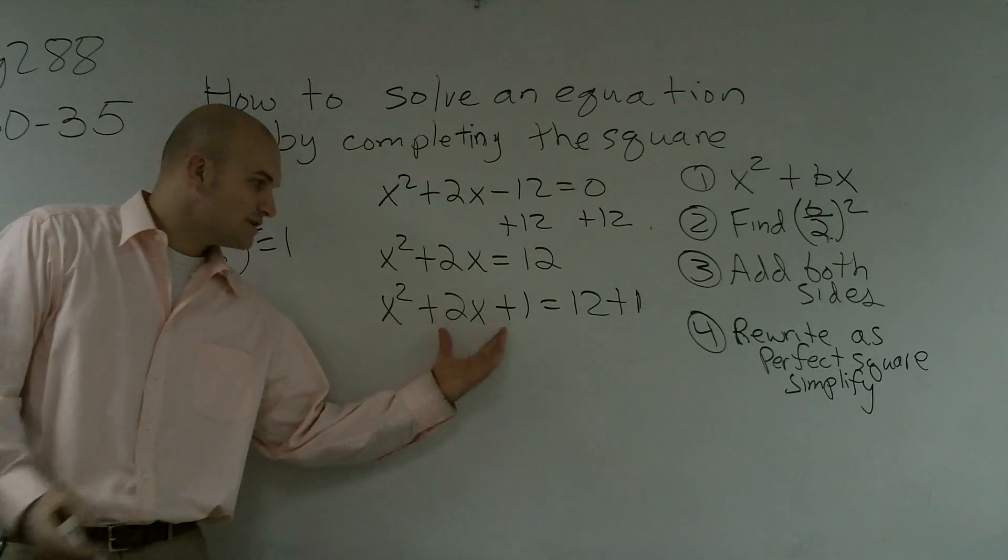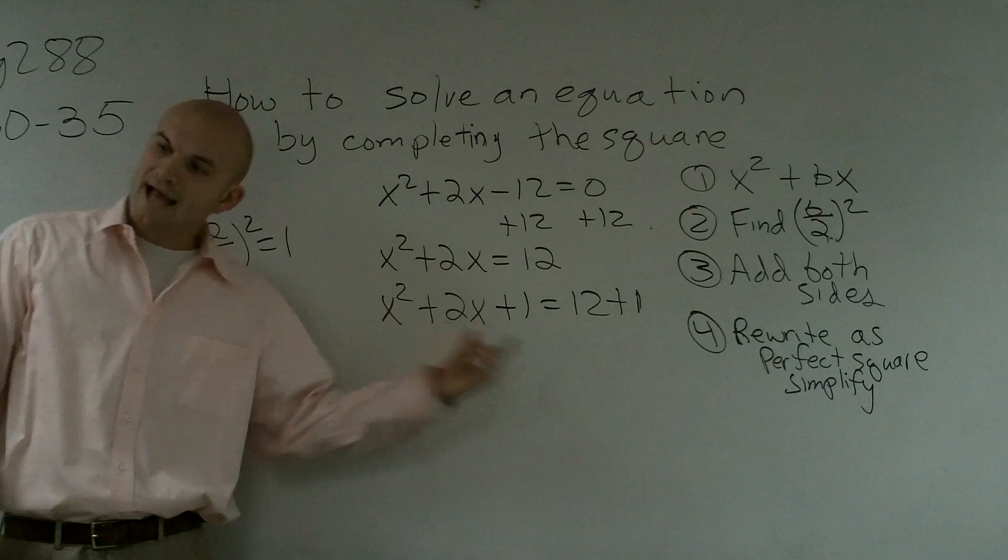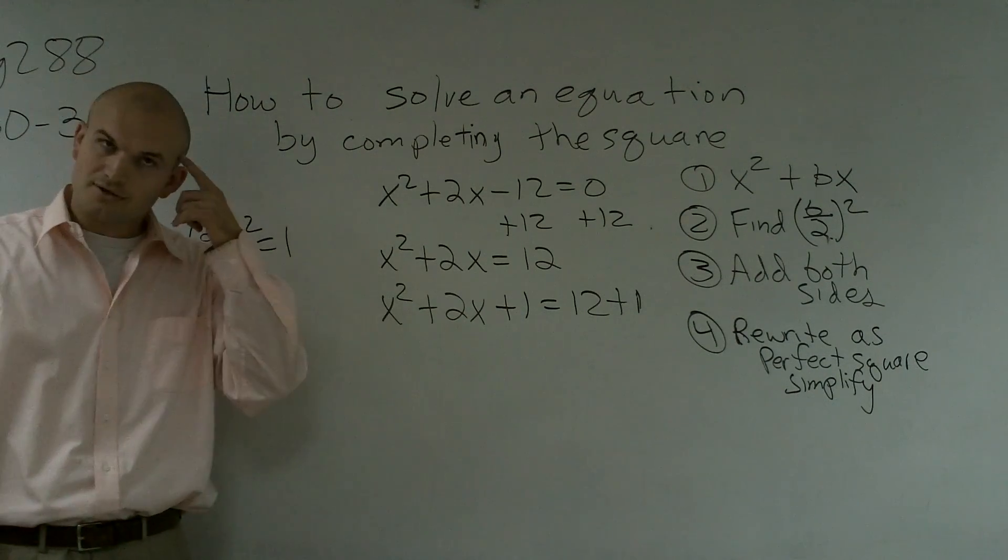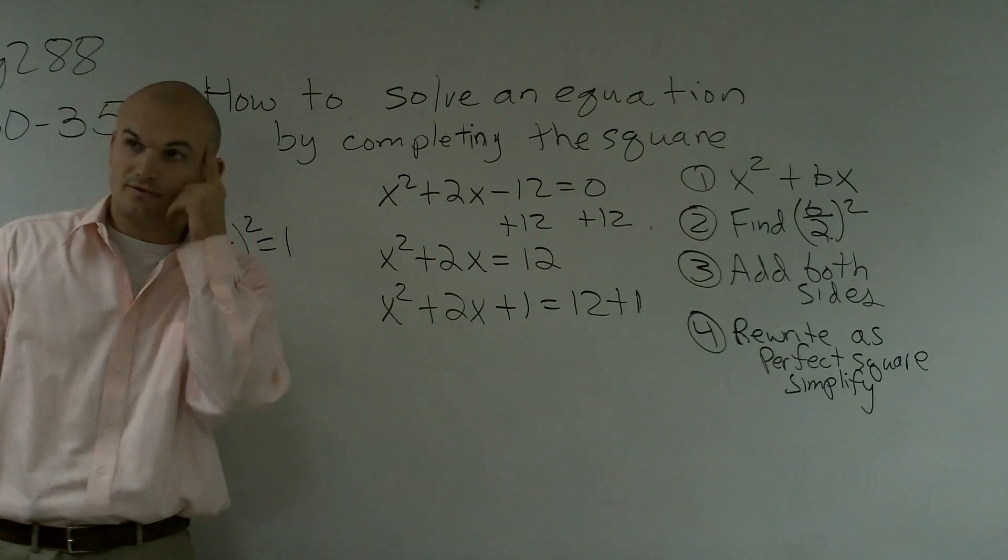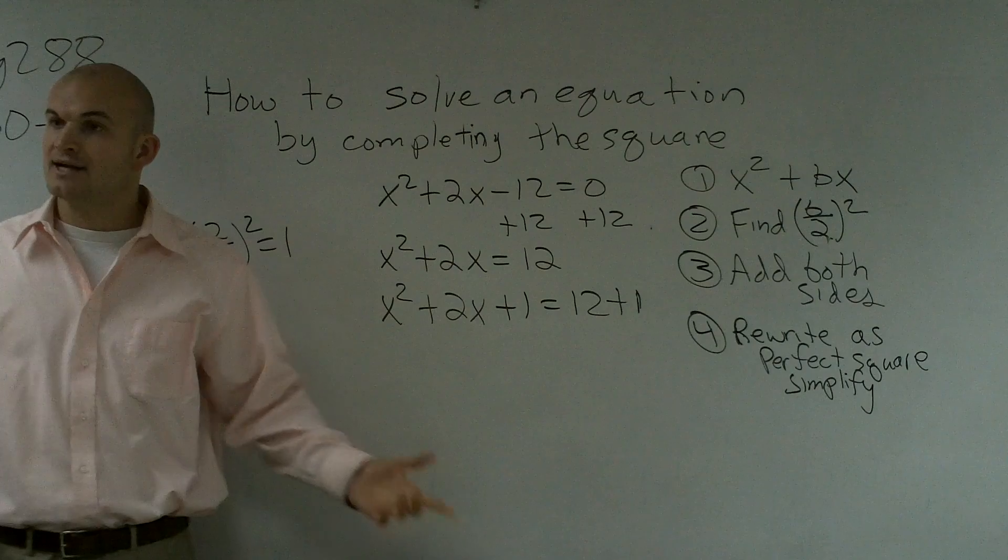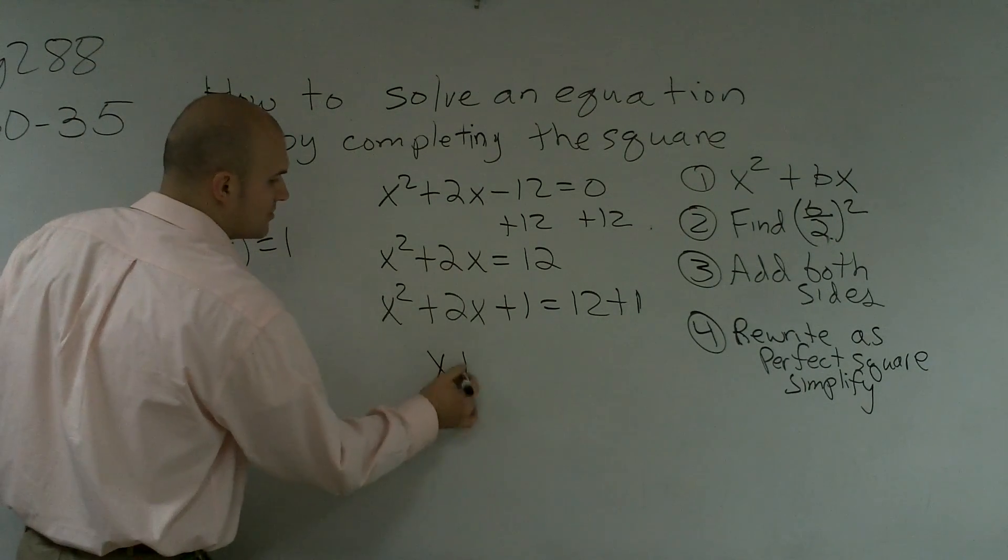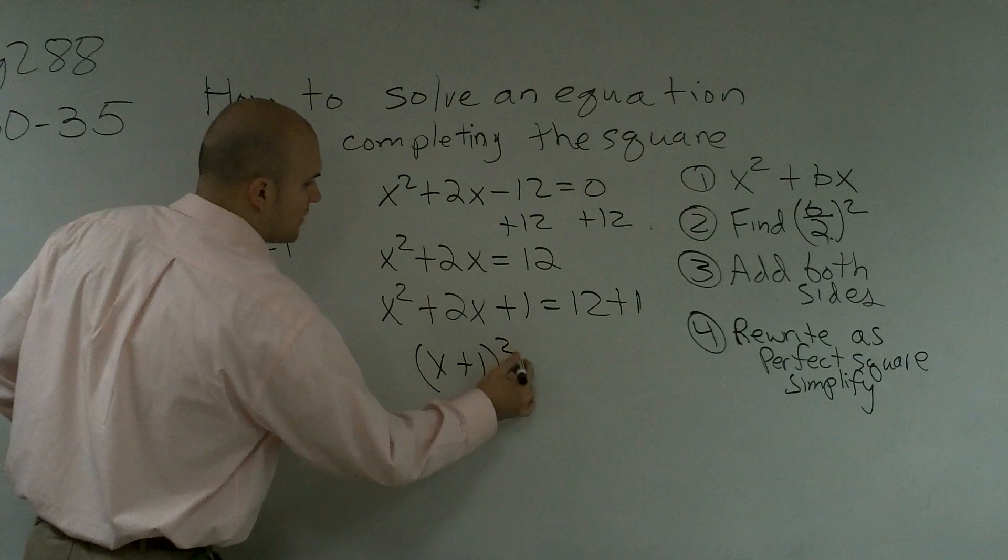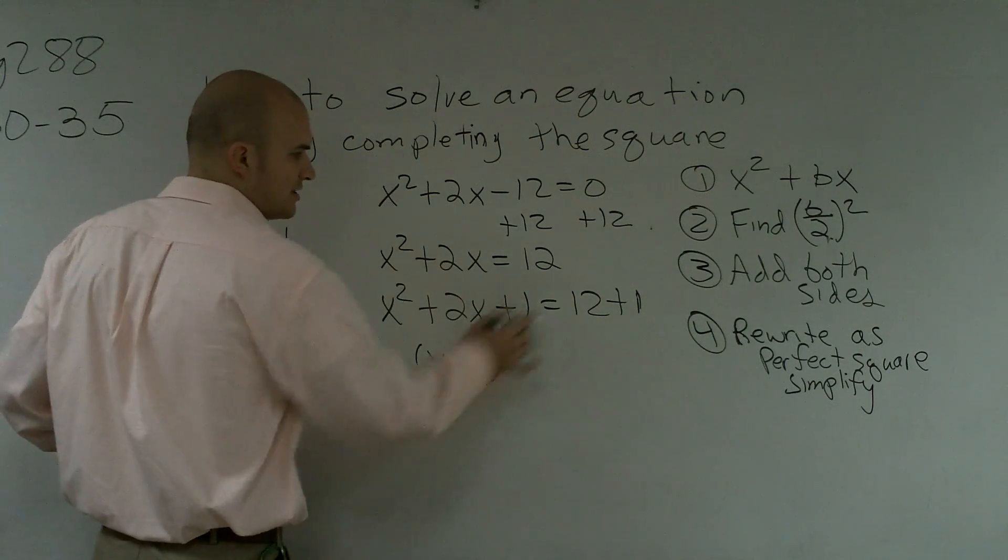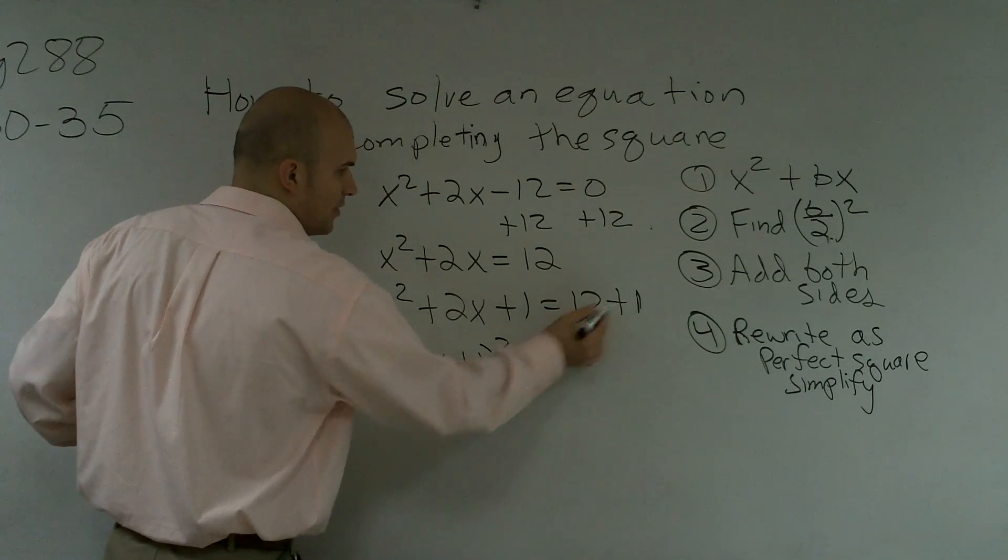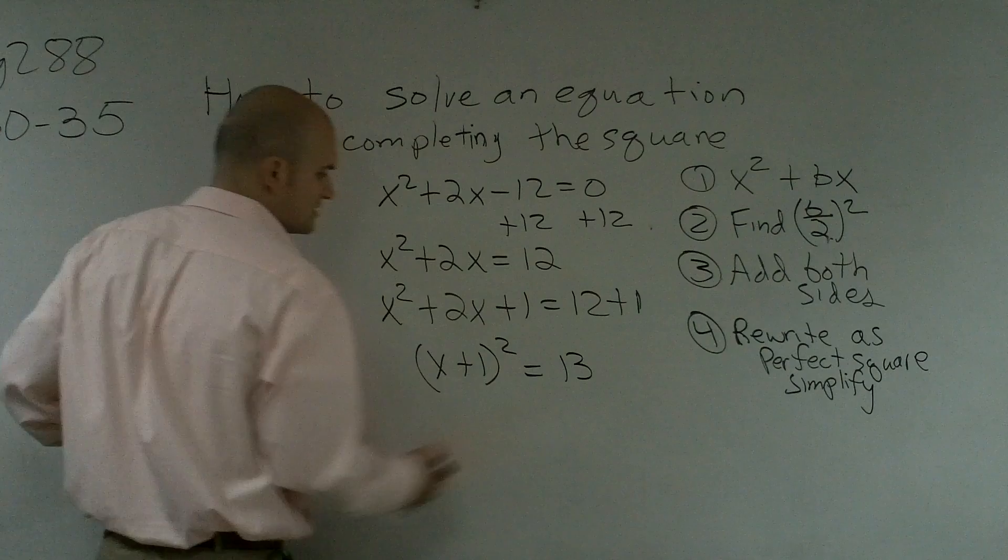So first thing, what we need to do is say, all right, what two numbers multiply to give you 1, but add to give you 2? And you're just going to start thinking, all right, well, the only two numbers that multiply to give you 1 are 1 and 1, and do they add to give me 2? Yes. So instead of writing it like this, I write it as x plus 1 squared. Then I go and simplify my other side, which is going to be 12 plus 1 is 13.